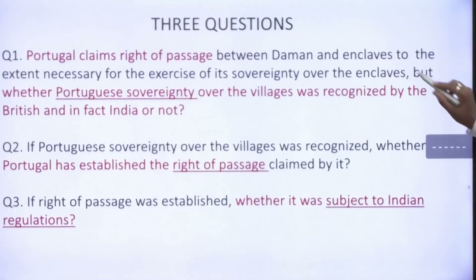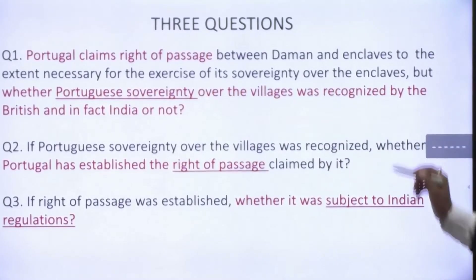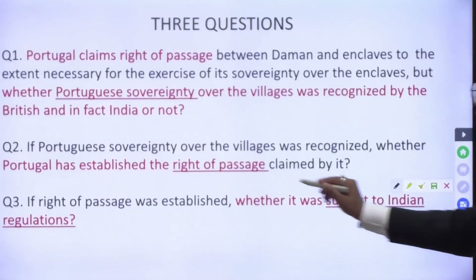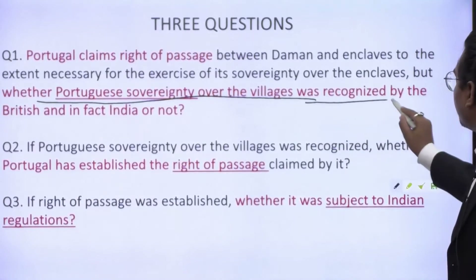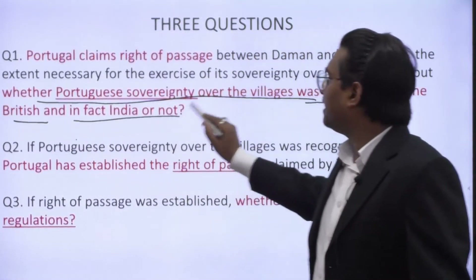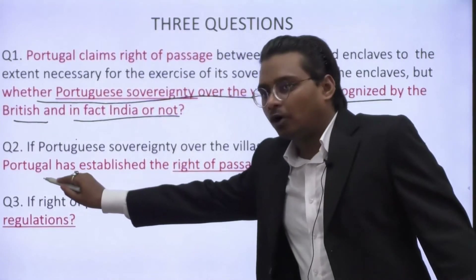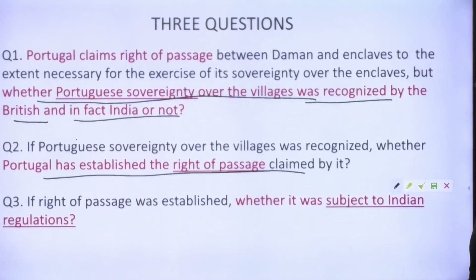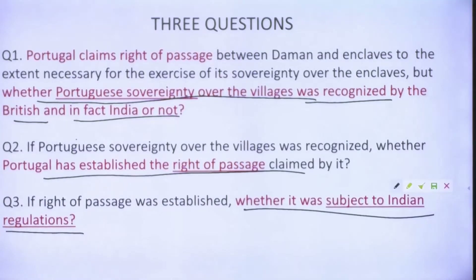Three questions were to be determined in this case. First, whether Portuguese sovereignty over the villages was recognized by the British and subsequently by India. Second, if sovereignty was recognized, whether Portugal had established the right of passage. Third, if the right of passage was established, whether it was subject to Indian regulations.